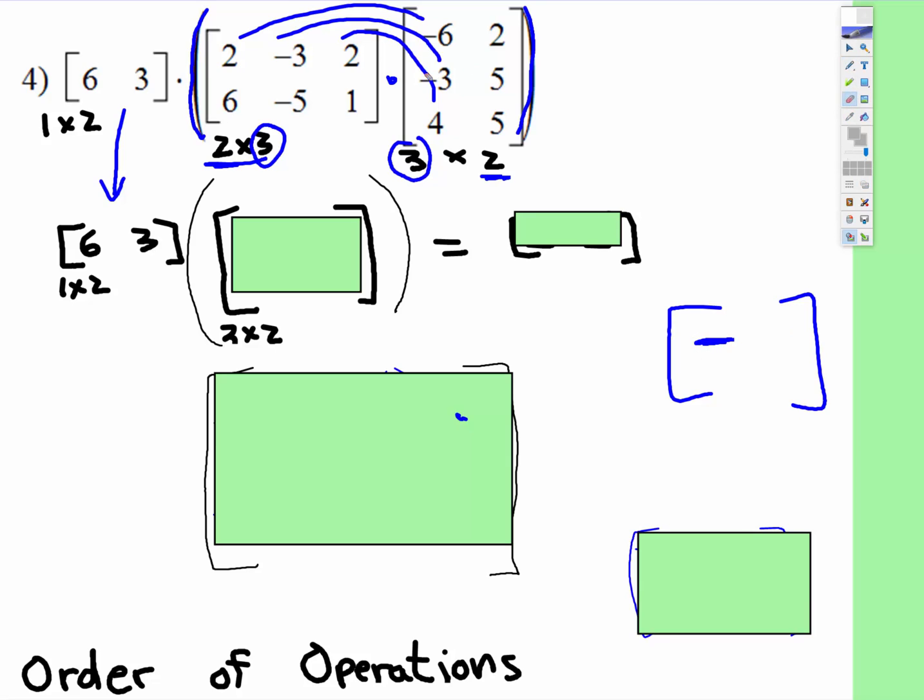And that will be for that space right there. Then once you have that space finished, we're going to move over to this space. So two times two, negative three times five, two times five. You're going to add those things together. So two times two plus negative three times five plus two times five. You're going to find the sum of those things and it's going to go there.